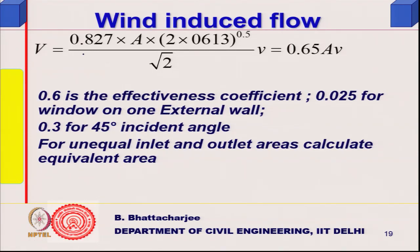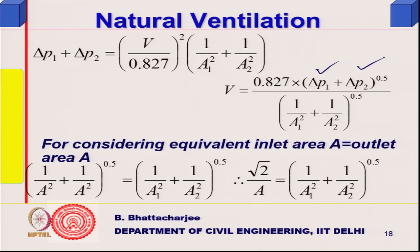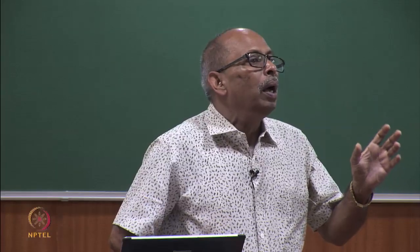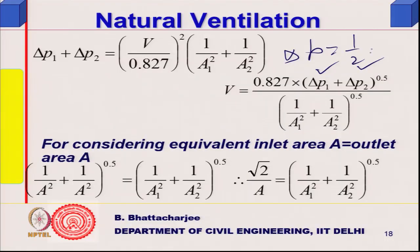Flow is simply 0.827 times A times delta P to the power 0.5, with total delta P taken as delta P1 plus delta P2. Pressure can be written as half-rho times v-squared. Half-rho equals 0.613, because the density of air is approximately 1.2 kg/m³.